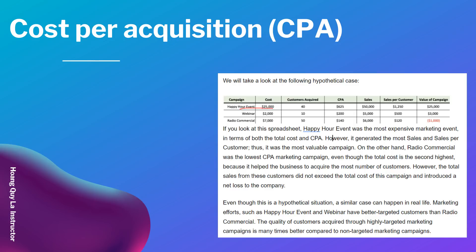It costs more to acquire such customers, but the value of each customer you acquire might be even higher and result in a profitable marketing campaign. Looking at a hypothetical case shown here: the happy hour event cost $25,000, customers acquired is 40, CPA is $625, sales is $50,000, sales per customer is $1,000, and value of the campaign is $25,000. The happy hour event was the most expensive marketing event in terms of both total cost and CPA; however, it generated the most sales and sales per customer, making it the most valuable campaign. The radio commercial had the lowest CPA even though its total cost was second highest, because it acquired the most customers — however, the total sales did not exceed the total cost of the campaign, introducing a net loss.